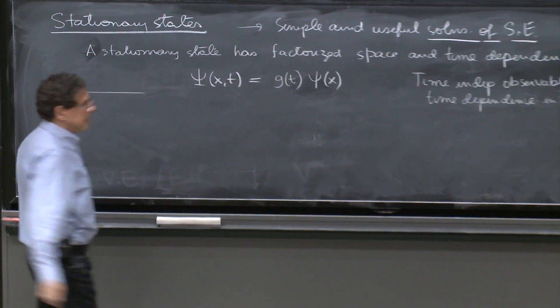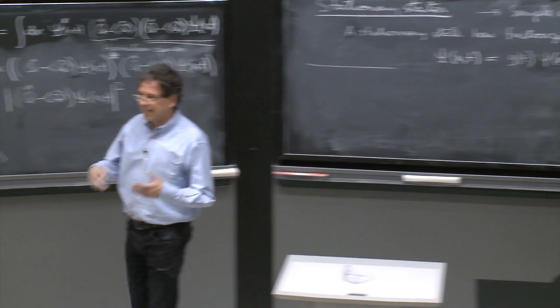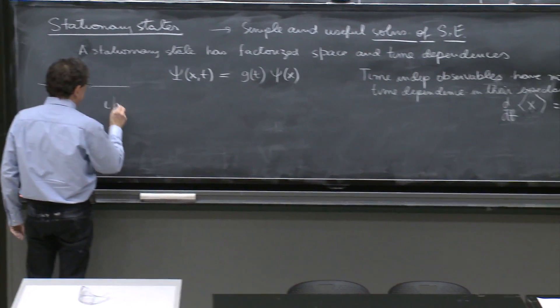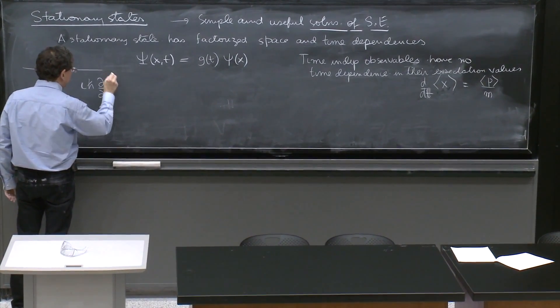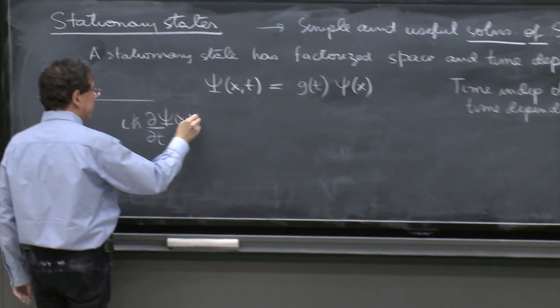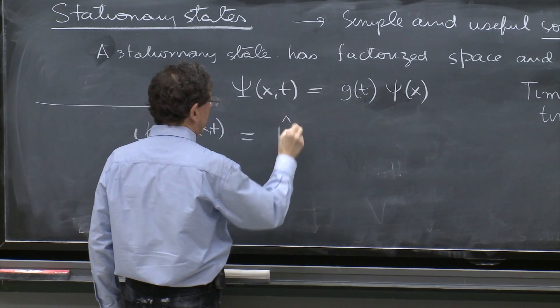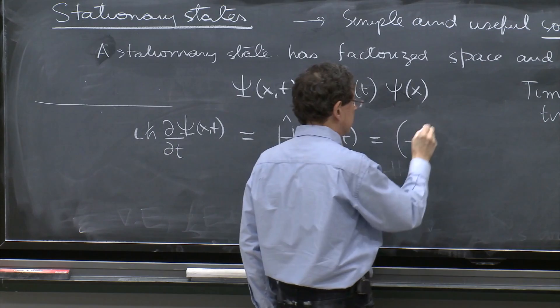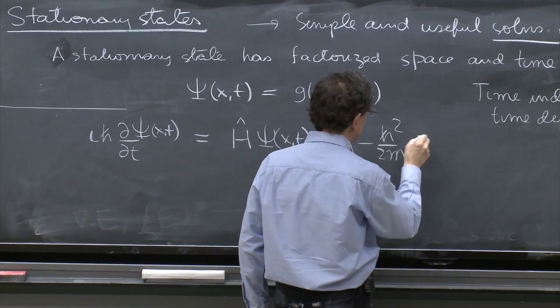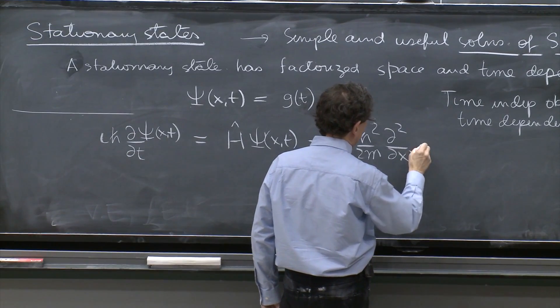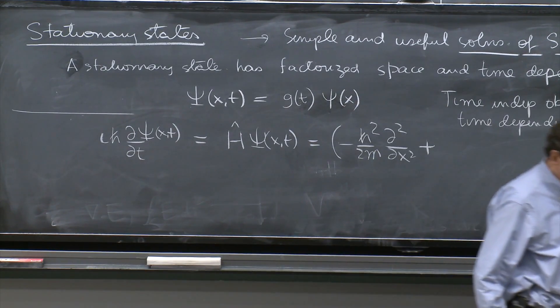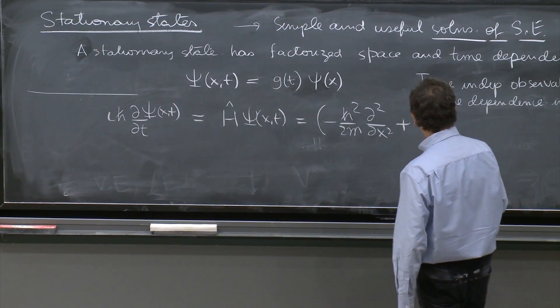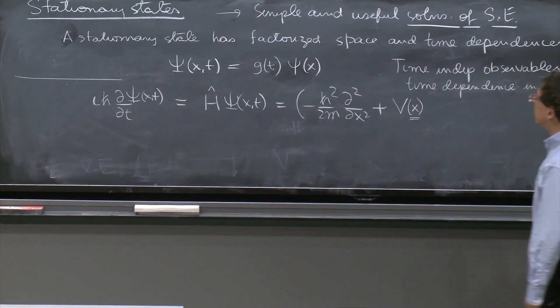So enough of saying things, and let's just get to them. So we look at the Schrödinger equation. i h-bar d/dt of psi of x and t is equal to H-hat psi of x and t. And just to remind, is minus h-squared over 2m d²/dx² plus V of x.